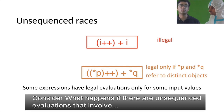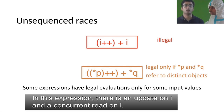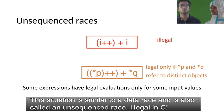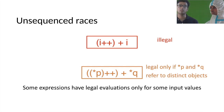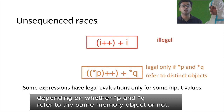Consider what happens if there are unsequenced evaluations that involve concurrent memory accesses to the same memory object. For example, in the expression i++ + ++i, there is an update to i and a concurrent read on i. This situation is similar to a data race and is called an unsequenced race. Such an expression is illegal in C. But now consider this expression: *p++ + *q++. This expression may or may not be legal depending on whether *p and *q refer to the same memory object or not.